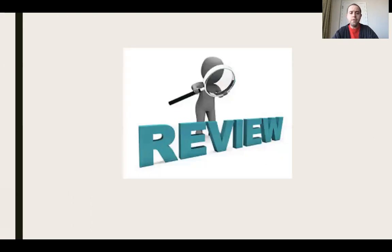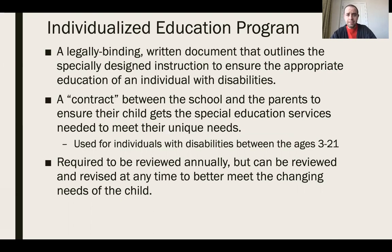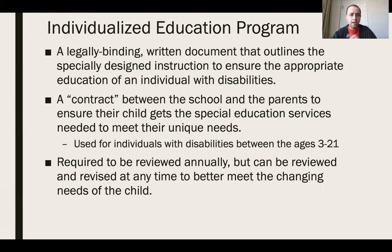To do a quick review: the IEP stands for Individualized Education Program. It's the document between the school district and the student's family that ensures what we're going to accomplish in one year's time is understood by both parties. It lays out the blueprint for one year. It's used for individuals from early intervention at age three all the way through age 21, and it's required to be reviewed annually, though revisions can be made at any time.